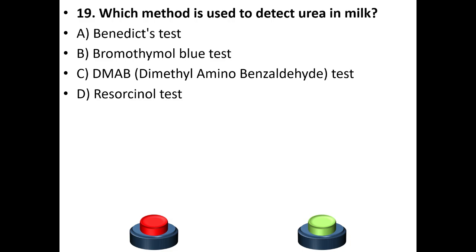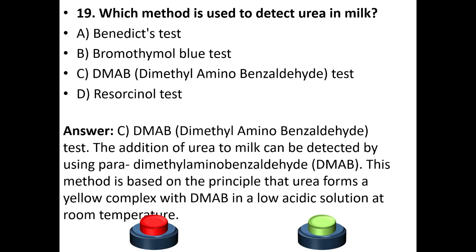Nineteenth question: Which method is used to detect urea in milk? A. Benedict's test. B. Bromothymol blue test. C. DMAB (dimethylaminobenzaldehyde) test. D. Resorcinol test. Your answer is option C: DMAB — dimethylaminobenzaldehyde. The addition of urea to milk can be detected using para-dimethylaminobenzaldehyde. This method is based on the principle that urea forms a yellow complex with DMAB in a mildly acidic solution at room temperature.